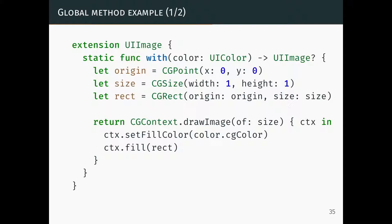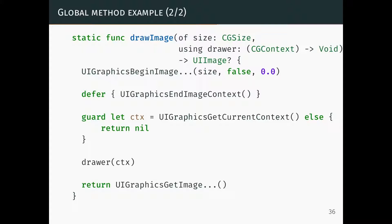Another common obstacle is global methods. For example, code that draws an image in a single color uses UIKit global functions wrapped in a context closure. Without the wrapper, the code is polluted with UIKit global functions that don't belong to any module, with names so long they couldn't even fit on the slides.